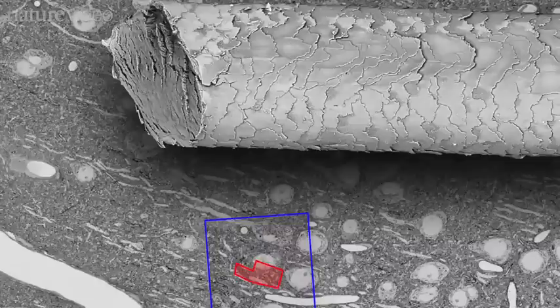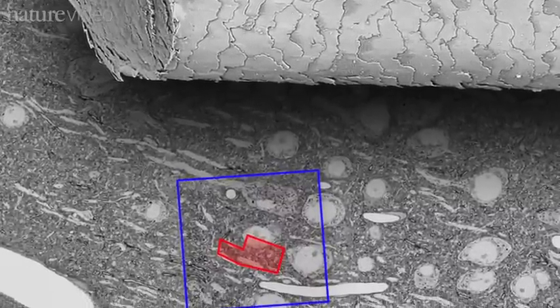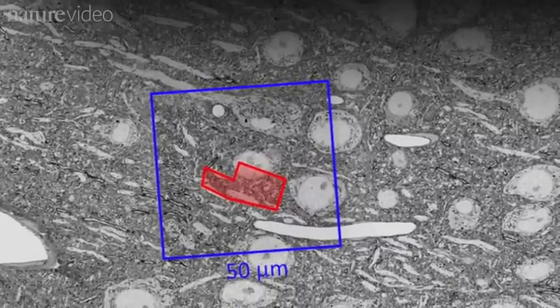And it's from the cortex, an area that does more sophisticated computations. Here's the area next to a human hair. Even this micro sample is giving surprising hints about how the brain works.